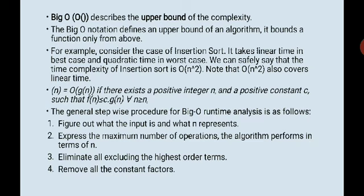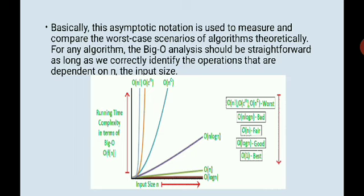Formally, we say f(n) is O(g(n)) if there exists a positive integer n and a positive constant c such that f(n) is less than or equal to c times g(n). The general stepwise procedure for Big O analysis is: first, figure out what the input is and what n represents. Then express the maximum number of operations the algorithm performs in terms of n. Then eliminate all excluding the highest order terms. You take the highest order terms—if it is n squared or n cubed, you take n cubed. If it is n cubed or n to the fourth, you take n to the fourth. And you remove all the constant factors.